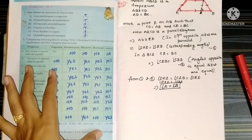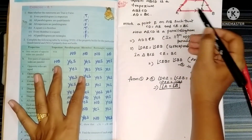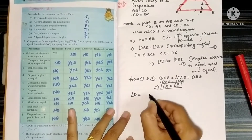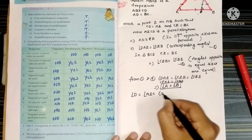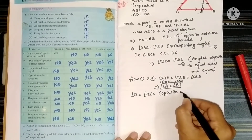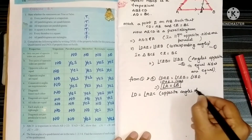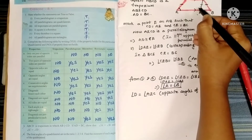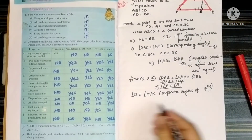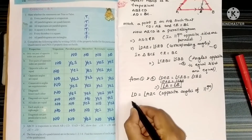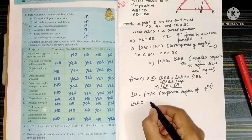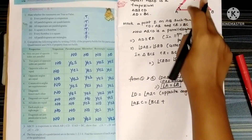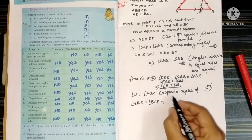Now we have to prove angle C equals angle D. In the parallelogram, opposite angles are equal, so angle D equals angle AEC. This angle AEC is an exterior angle to triangle BCE. The exterior angle property states that the exterior angle equals the sum of its two opposite interior angles. So angle AEC equals angle BCE plus angle CBE.